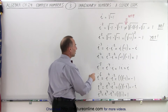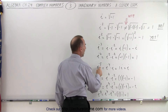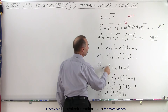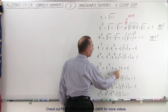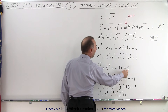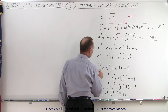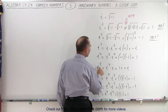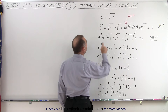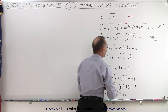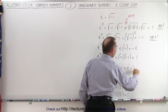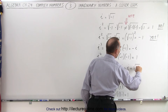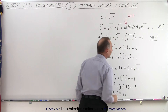i to the fifth power is i to the fourth power times i. Since i to the fourth power is 1, we get 1 times i, or simply i again. So i to the fifth is the same as i, which is also equal to the square root of negative 1.